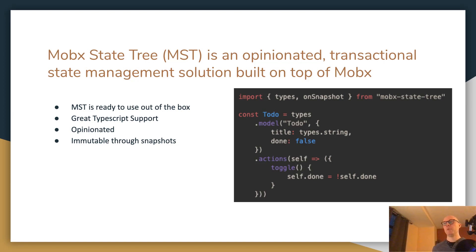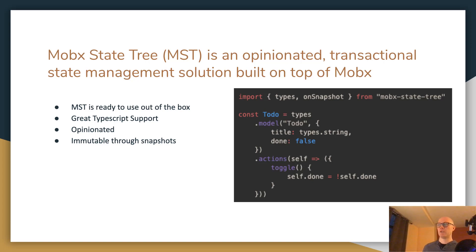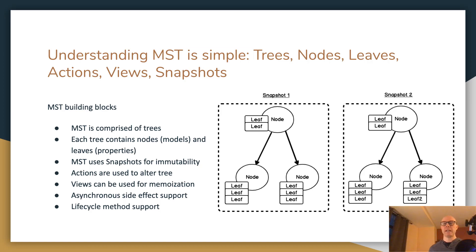MobX State Tree also has immutability support through a thing called snapshots. You can think of a snapshot as a point in time of your state management structure — each time you update your store, a new snapshot is created, which essentially creates the immutable part of MobX State Tree. Understanding MobX State Tree comes down to six main pieces: trees, nodes, leaves, actions, views, and snapshots. If you understand these six pieces, you'll understand about 90% of MobX State Tree in general.